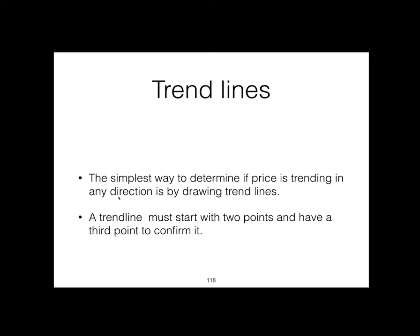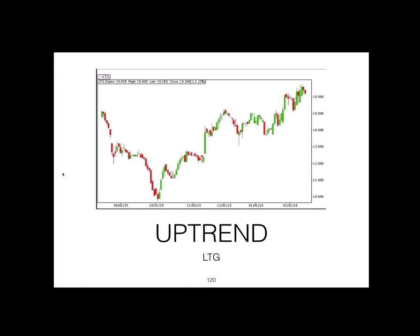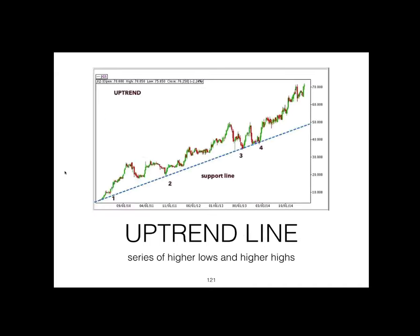Trend lines are the simplest way to determine if price is trending in any direction. A trend line must start with two points and have a third point to confirm it. An uptrend has a positive slope — uptrend lines act as support and indicate that net demand is increasing even as prices rise. A rising price combined with increasing demand is bullish and shows strong determination on the part of buyers as long as prices remain above the uptrend line. The trend is the path of least resistance.